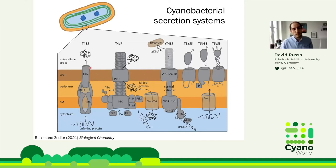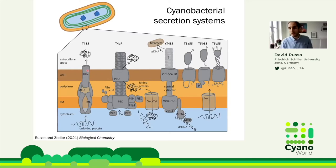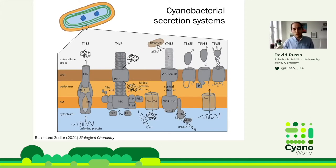Starting from left to right: on the left we have the Type 1 secretion system — the tripartite system Dimitri discussed last week. There's the inner membrane component, typically an ABC transporter with specificity for a metabolite or protein, then an adapter, then the outer membrane pore, which we call TolC based on homology and structural analysis. TolC is also involved in many other tripartite systems, so it's not only a protein secretion system but also a metabolite secretion system.